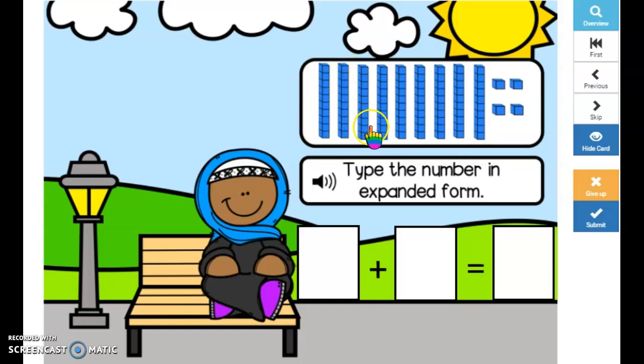10, 20, 30, 40, 50, 60, 70, 80, 90. Oh, this represents 90.